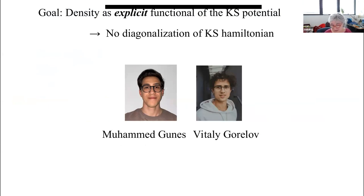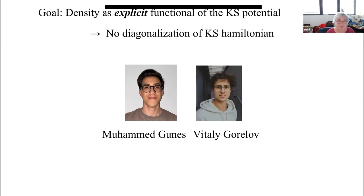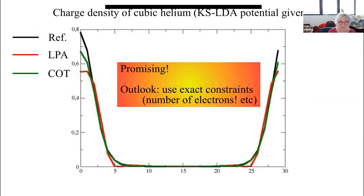Our motivation to work on the homogeneous electron gas was very much inspired by the fact that we need our models under control — we have to produce benchmark results and calculate models with controlled approximations. What Matteo has presented is just another example of how difficult the model part is. If you have questions about how you can get the charge density of a material with a simple formula depending on the potential, you can ask Muhammad in the discussion.